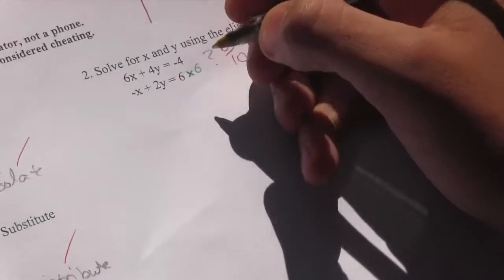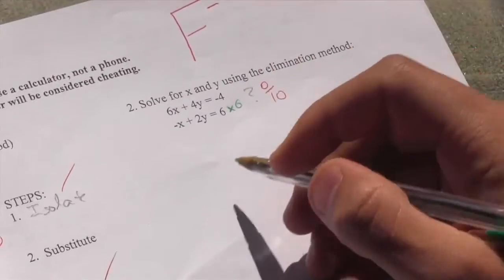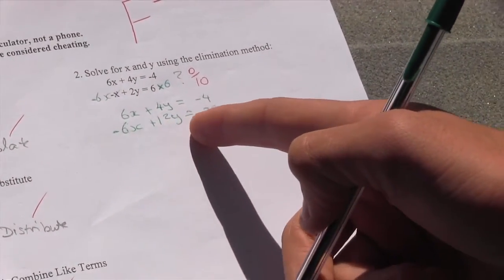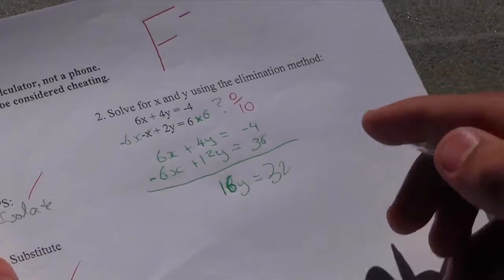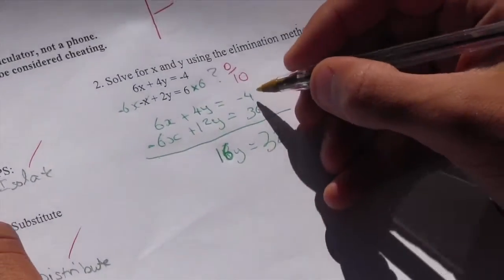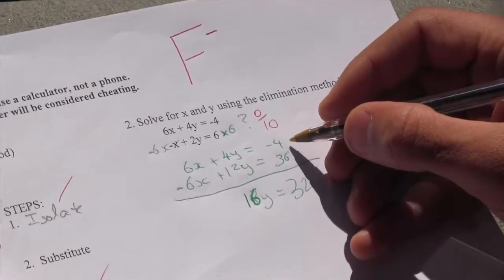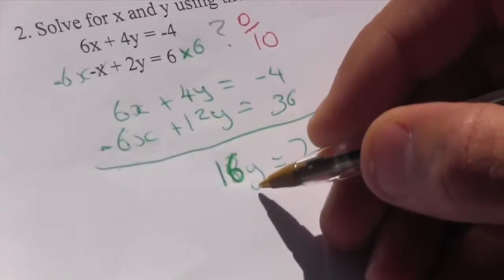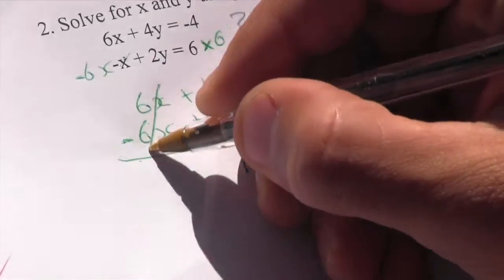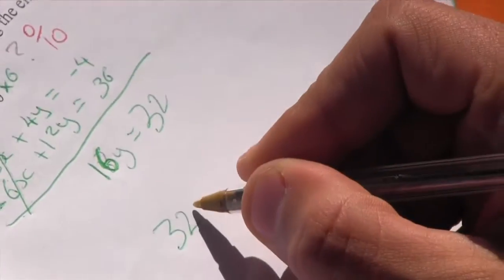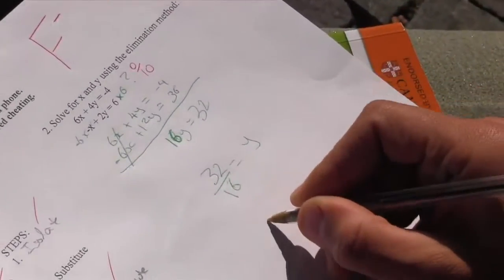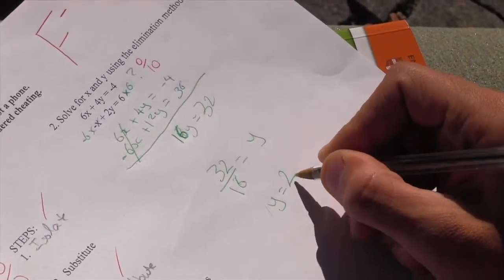So first you multiply by 6 in order to cancel out both the x's. Then you get negative 6x plus 12y equals 36. So you get 32 by taking negative 4 from 4, and 4y plus 12y equals 16y. The x's cancel out each other. This means 32 divided by 16 equals y. So y equals 2.